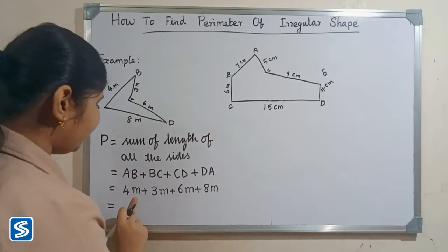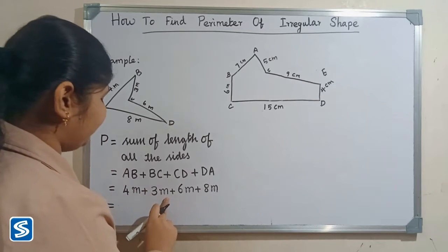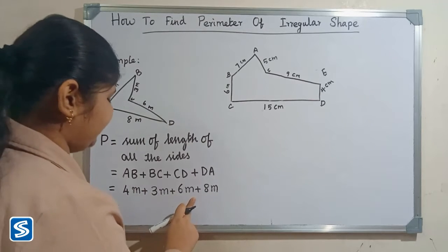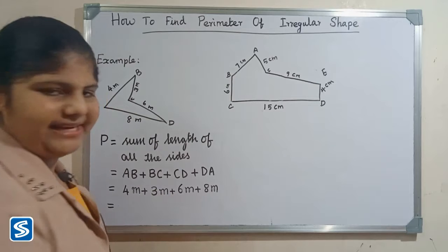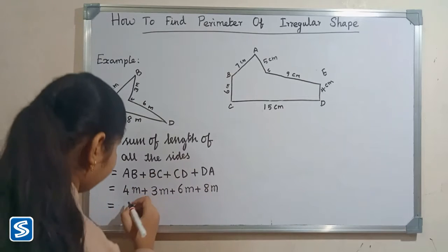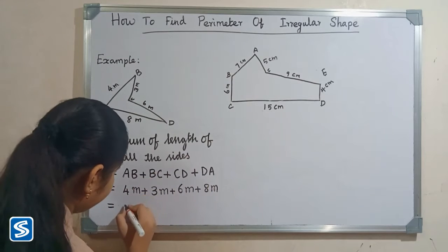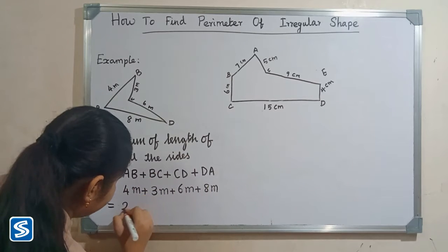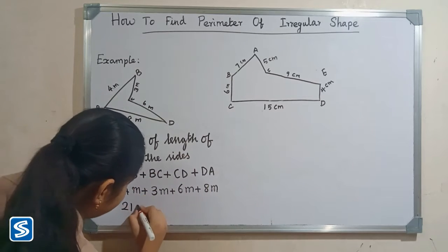So 4 meters plus 3 meters plus 6 meters plus 8 meters equals 21 meters.